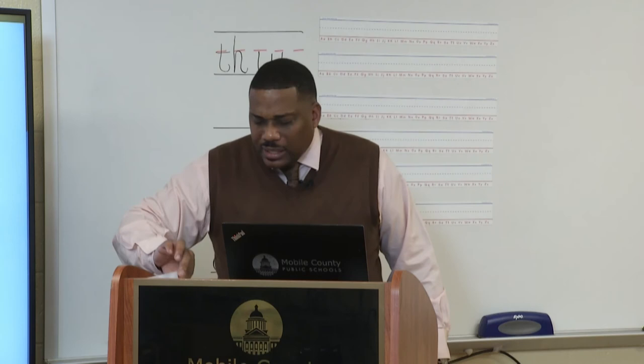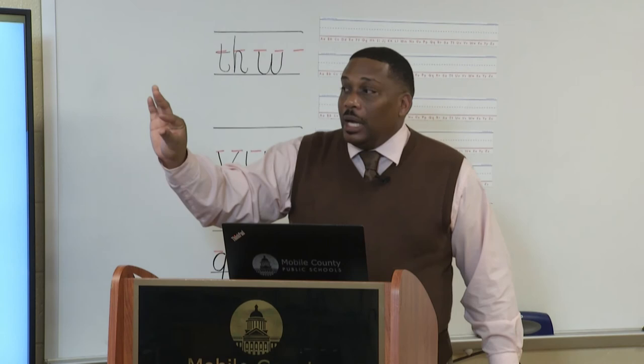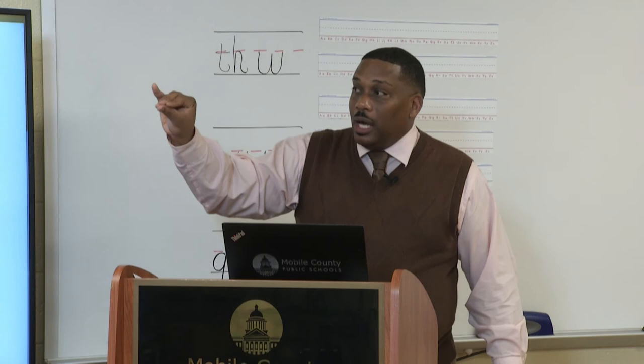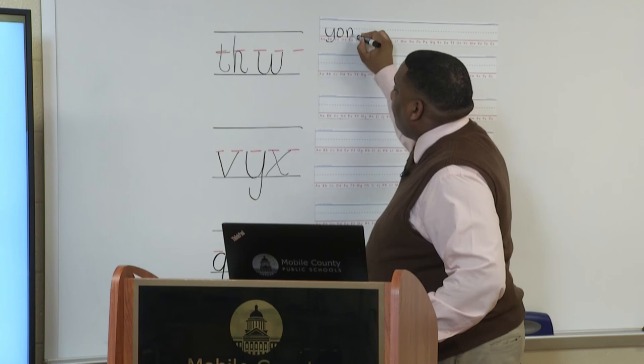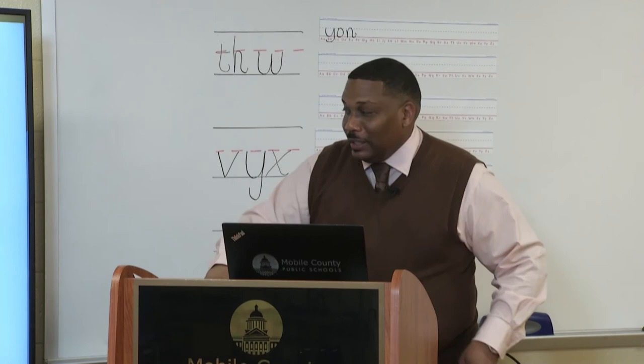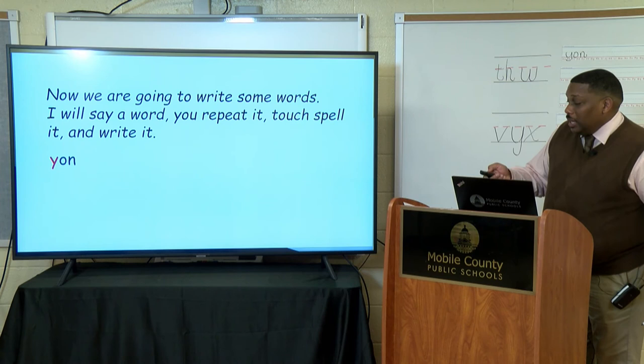Now we're going to write some words. Our first word is yawn. Yawn — I'll blend it for you: ya-a-wn. Write it. And kindergartners, this is what you should have written for the word yawn. Is that what you wrote? Great job. Let's see if we're correct — and we are: yawn.